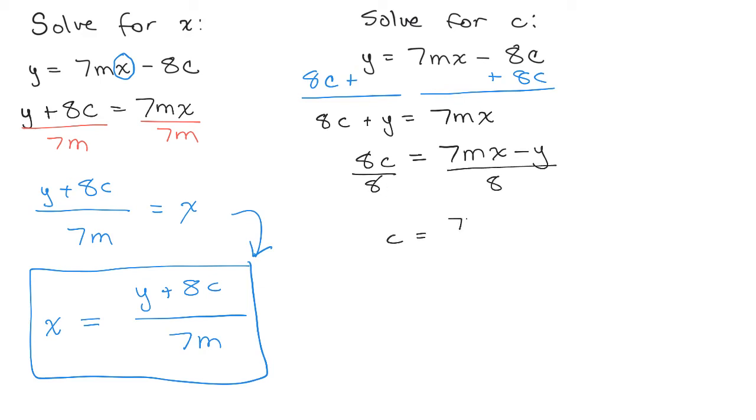Now, this is not the only way you could have done this. You could have kept the negative 8c on the right side of the equation and divided by negative 8 in the very last step. And it would look slightly different if you did it that way. So if you try it on your own and do it, your answer will probably look like this.